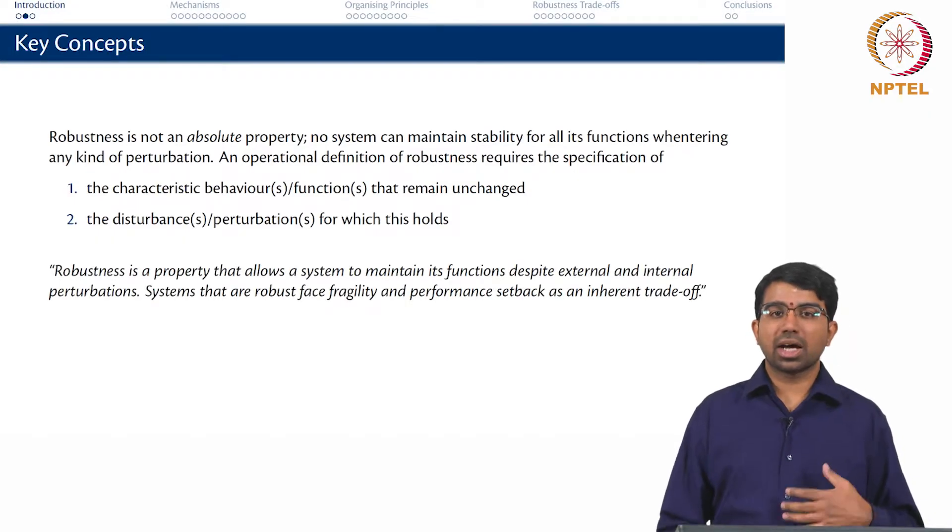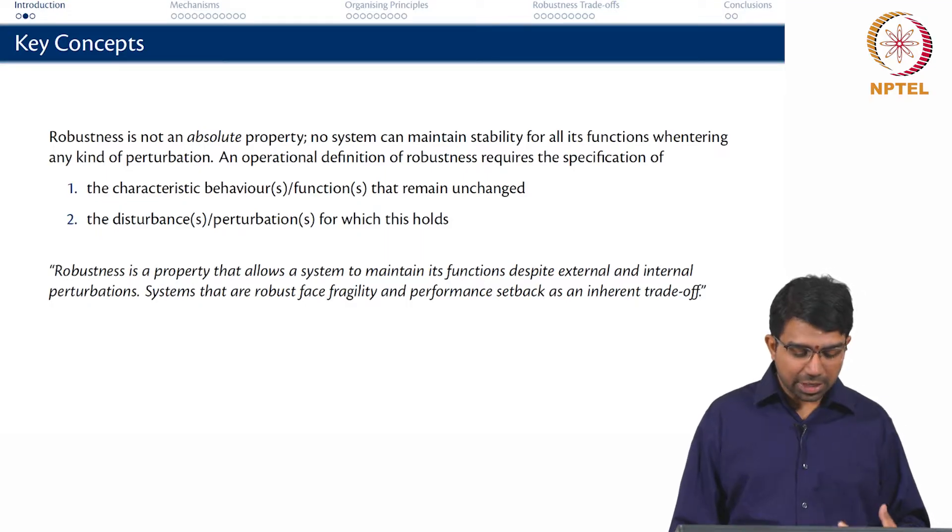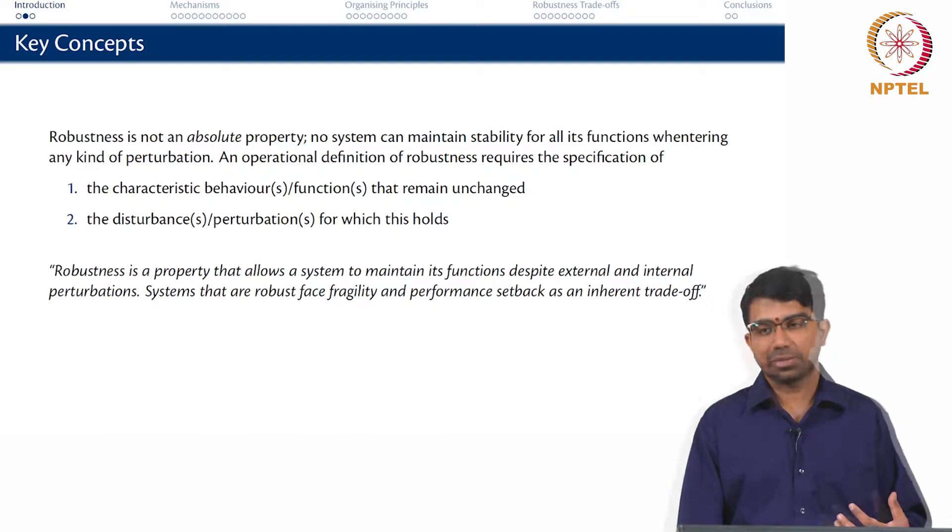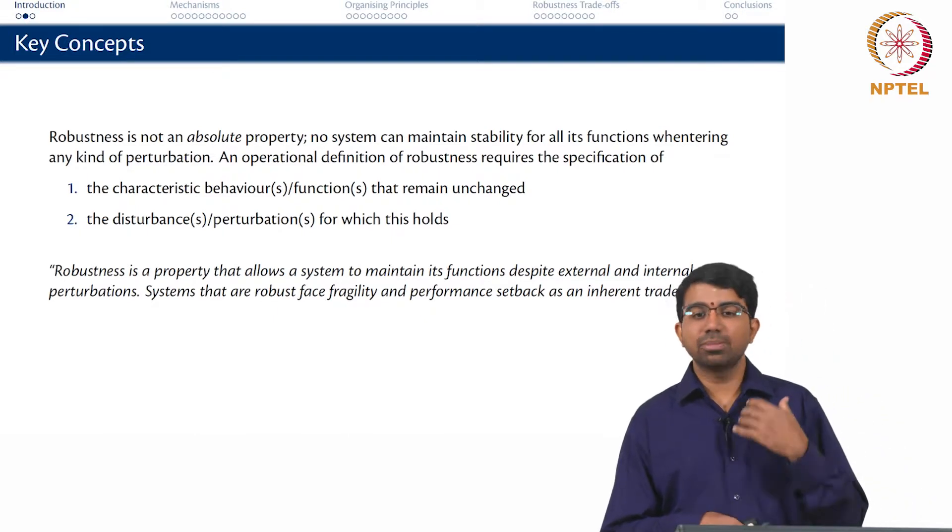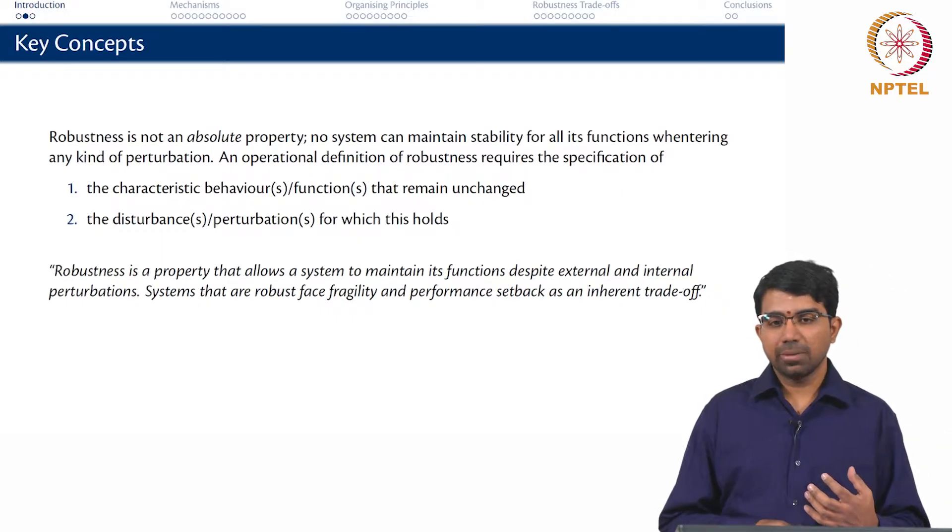So robustness is a property that allows the system to maintain its function despite external and internal perturbations. And systems that are robust also face some fragility and performance setback as an inherent trade-off. So no system is ever absolutely robust to all kinds of perturbations.